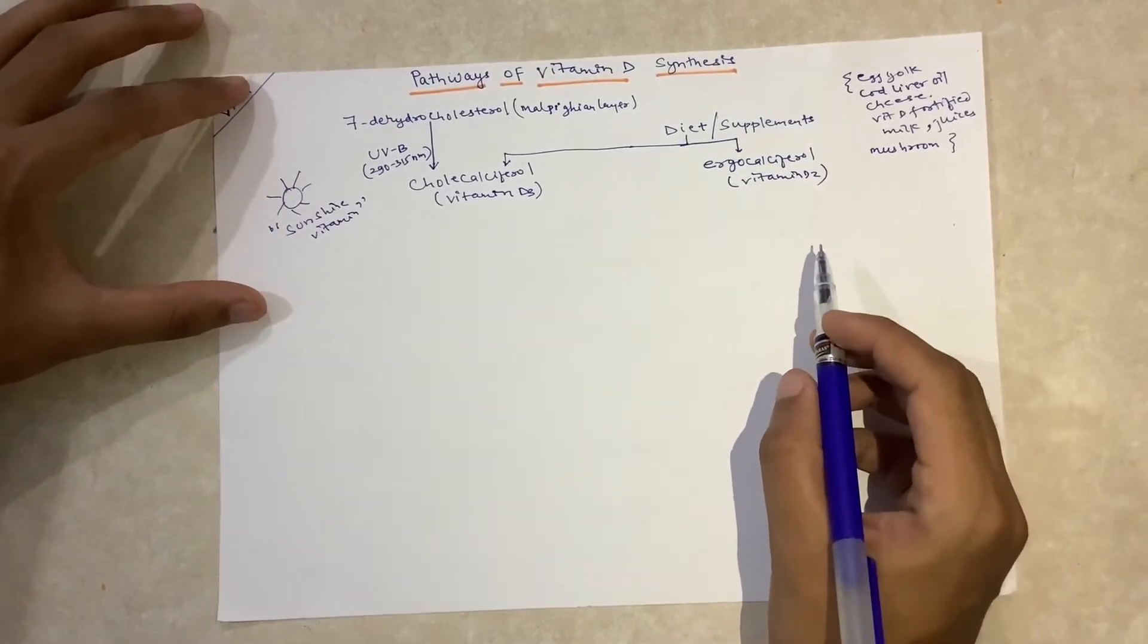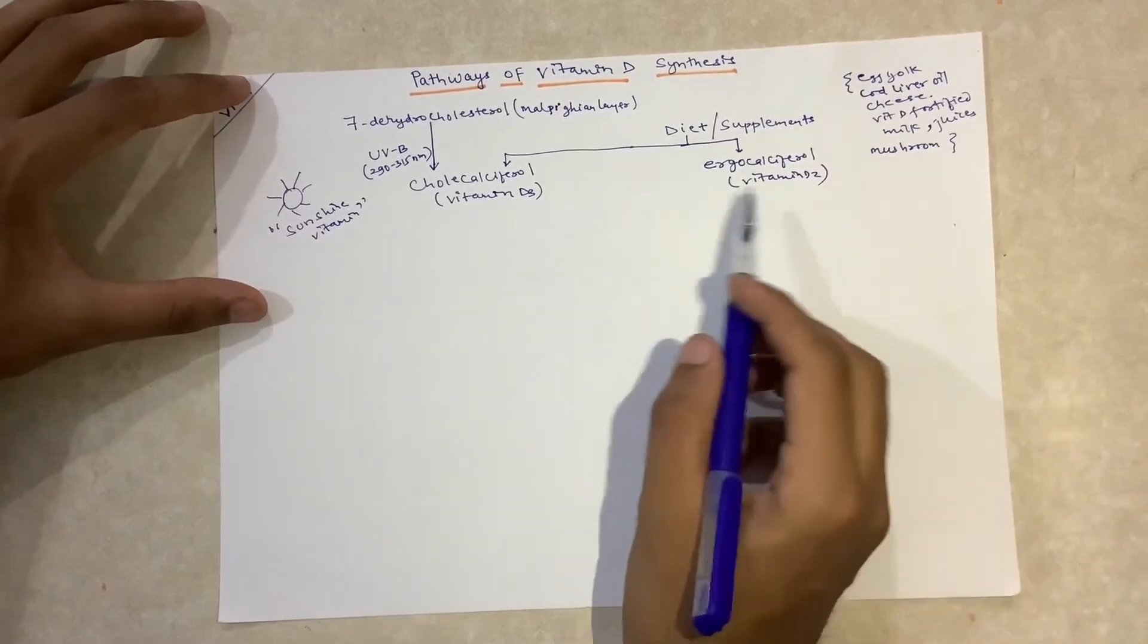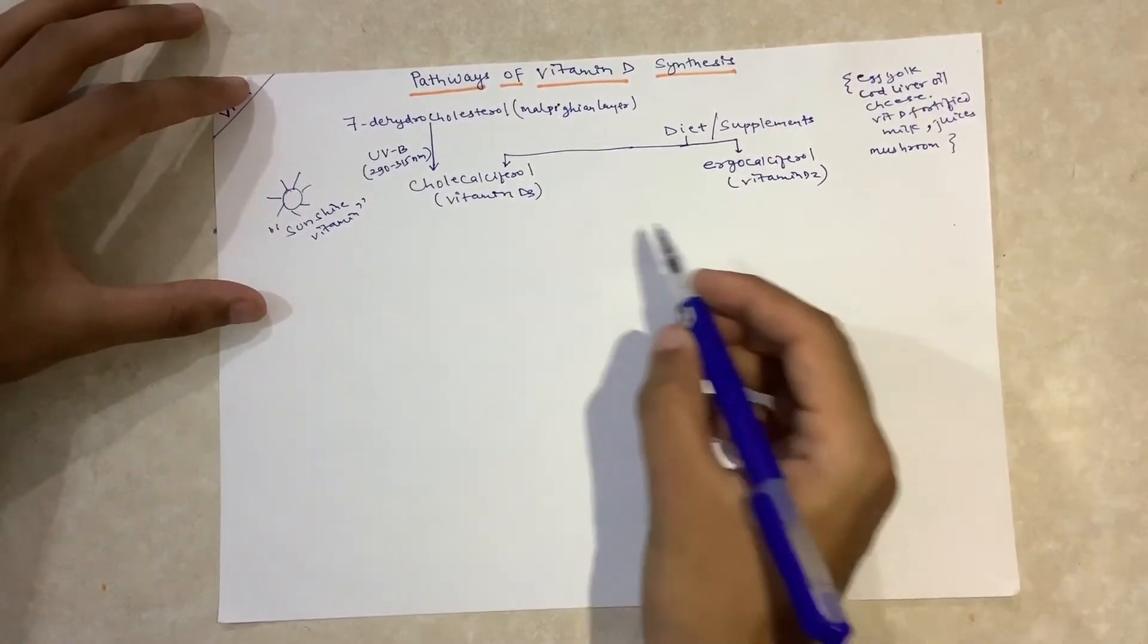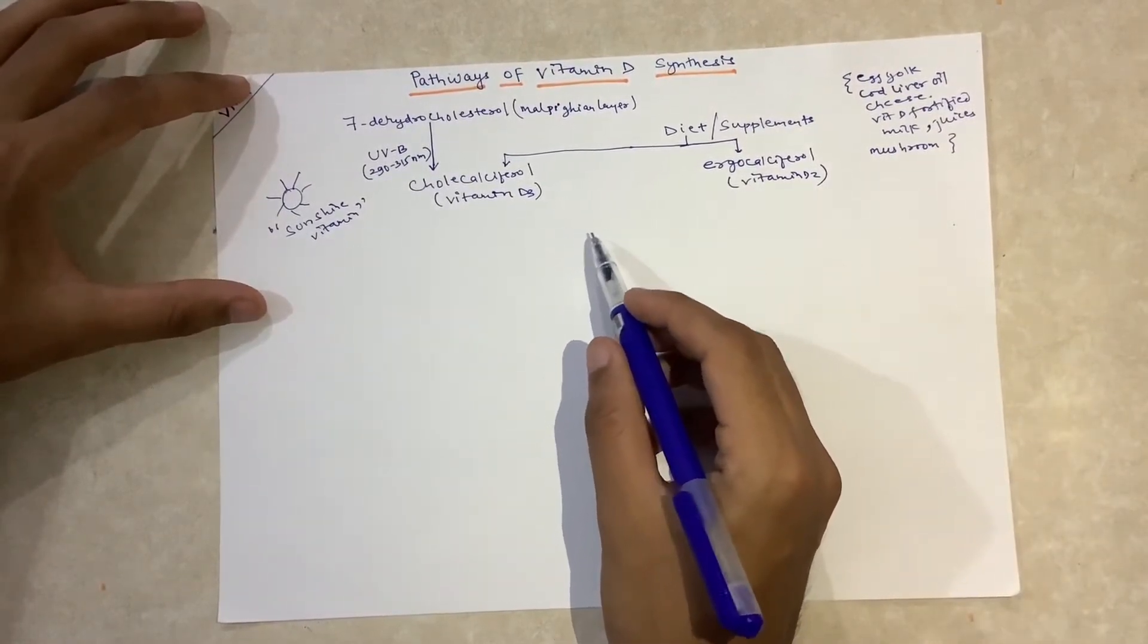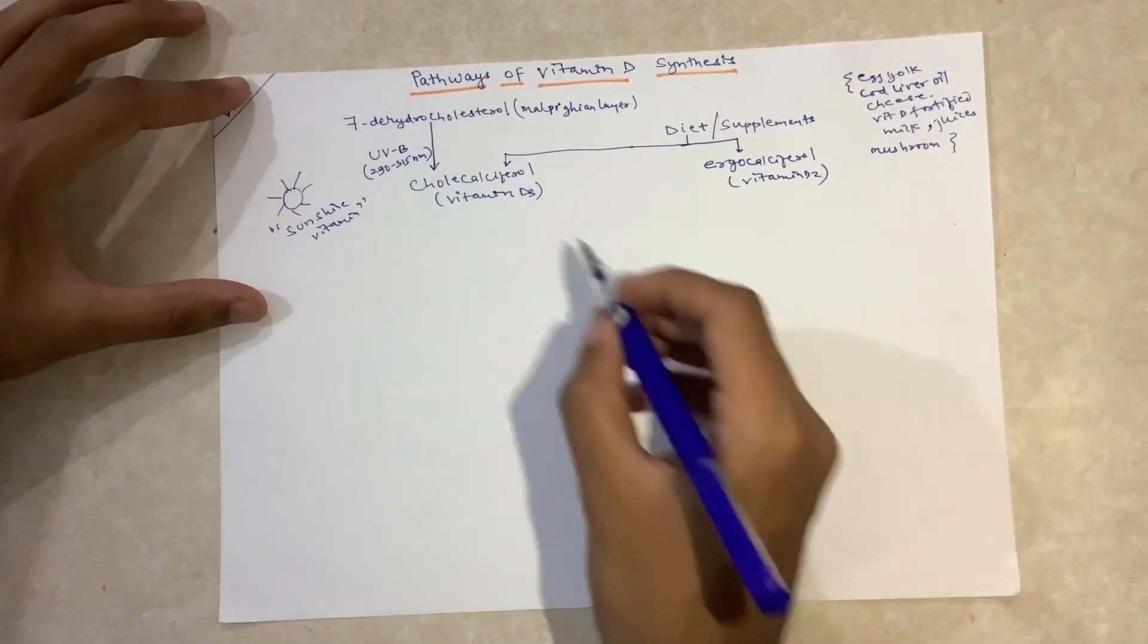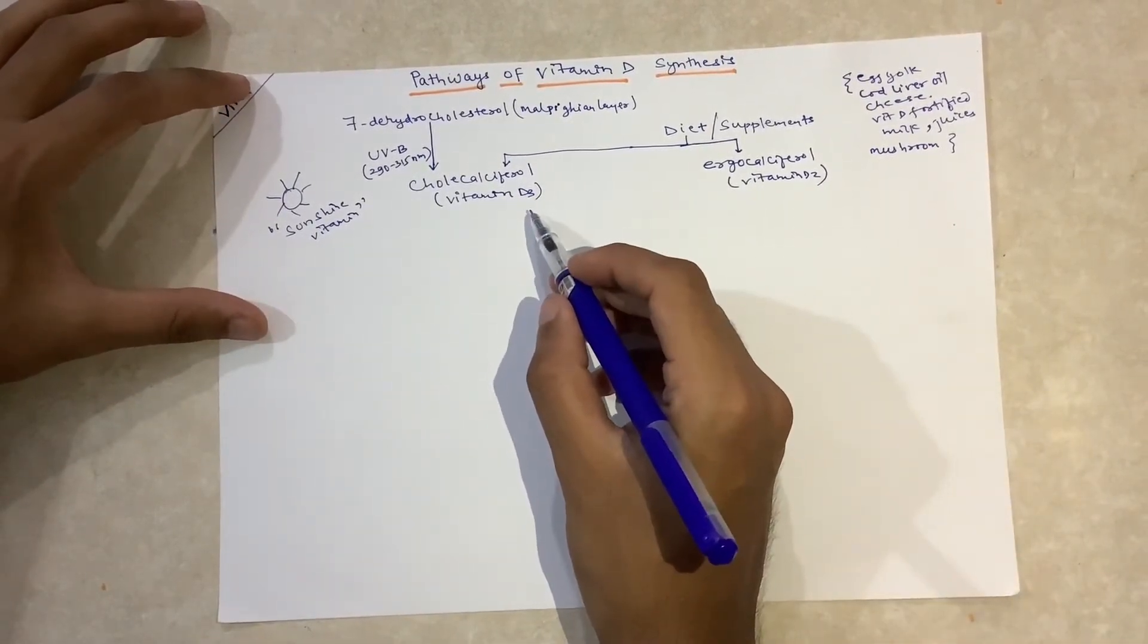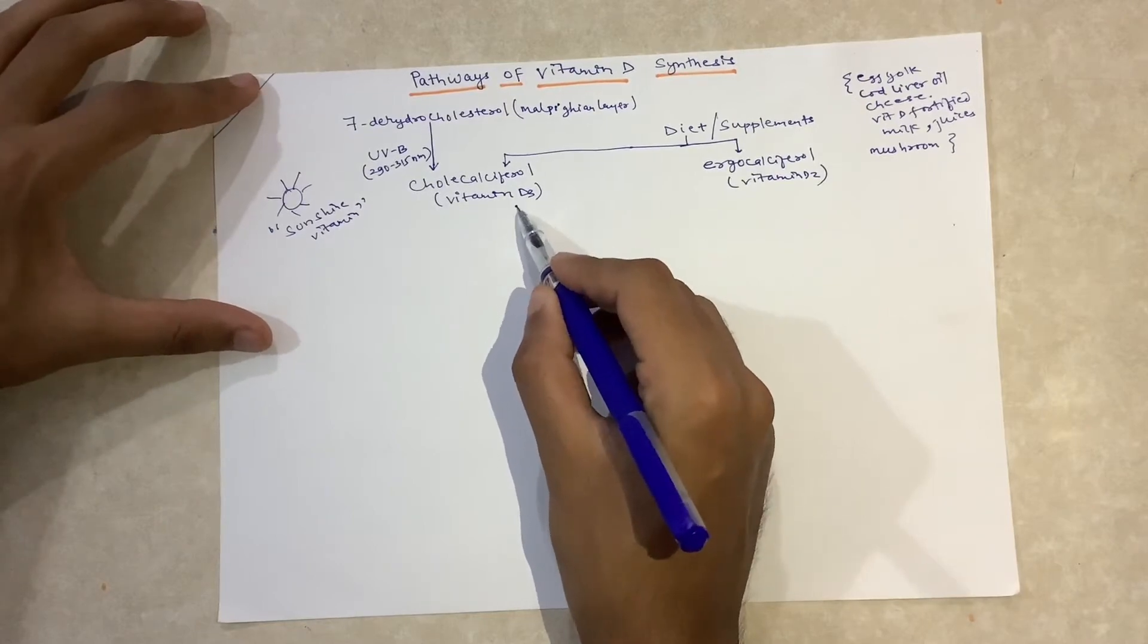When we take vitamin in either D3 or D2 form, it is absorbed in blood and binds to vitamin D binding protein, which is an alpha-2 globulin, and is transported to the liver.